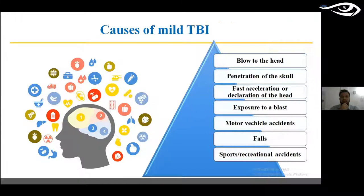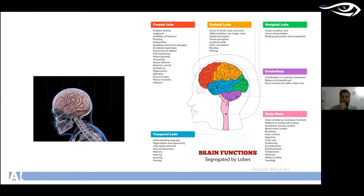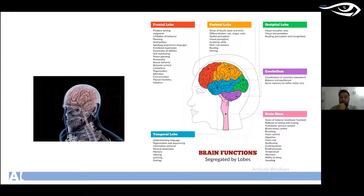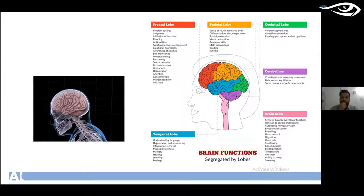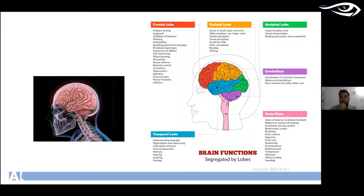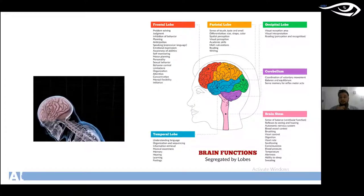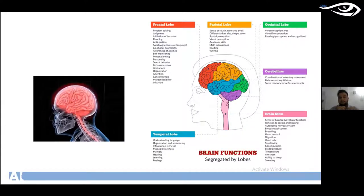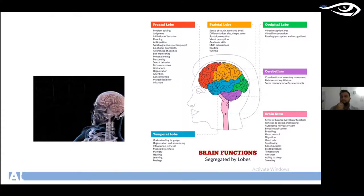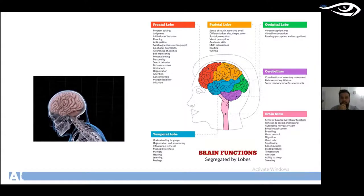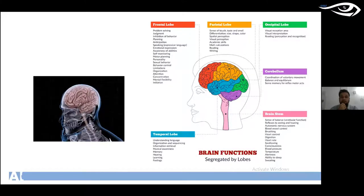It is important to understand brain anatomy and function in TBI because the brain is a complex structure with many neurons involved in visual processing. The occipital lobe serves as the mainstream for visual functions. When looking at a stimulus, the pons of the brainstem triggers the eye muscles to fixate, information passes through the retina and optic nerve to the occipital lobe where the image is perceived, and then the parietal and temporal lobes process that image for visual perception and visual memory.